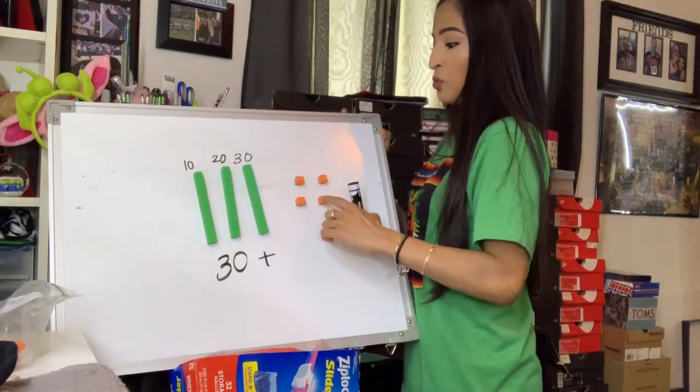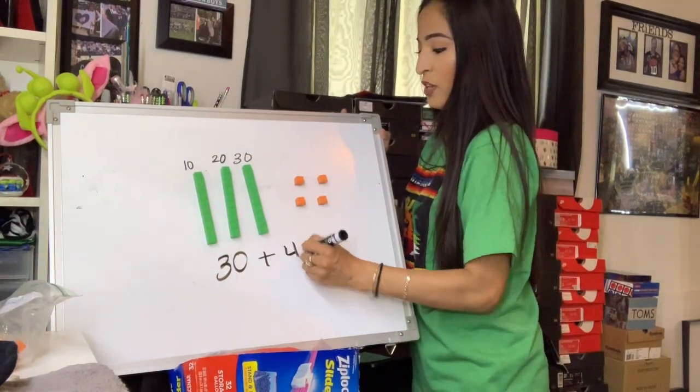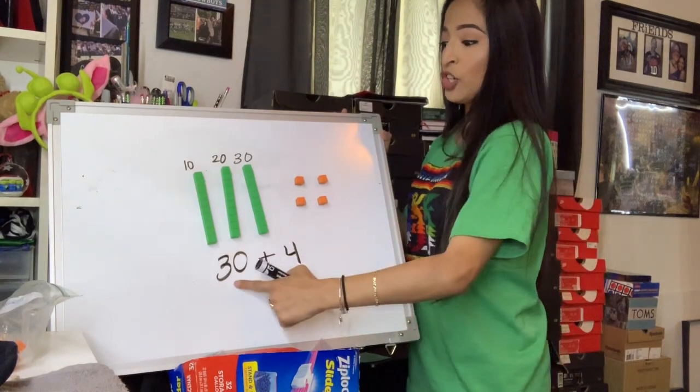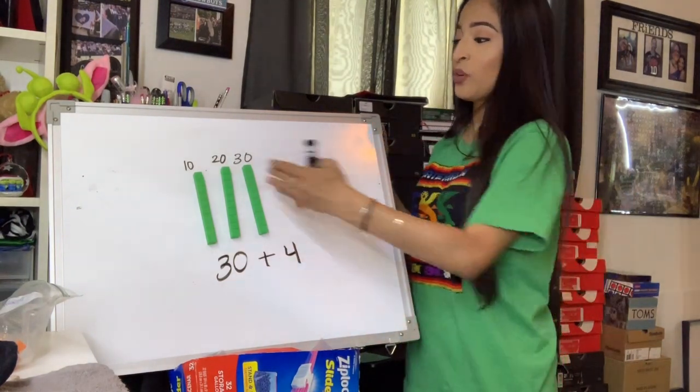So we'll one, two, three, four. So the expanded form is 30 plus 4, giving us the number 34.